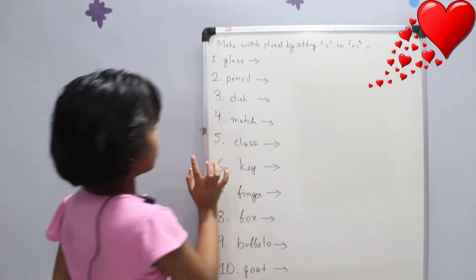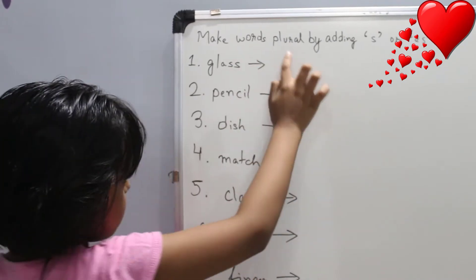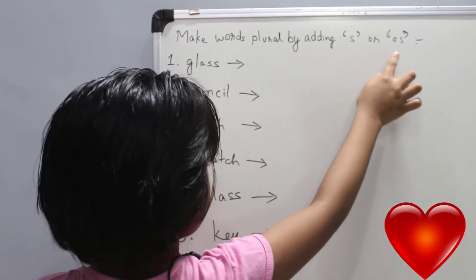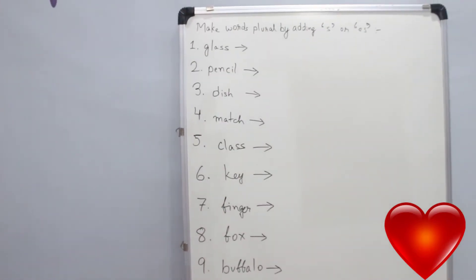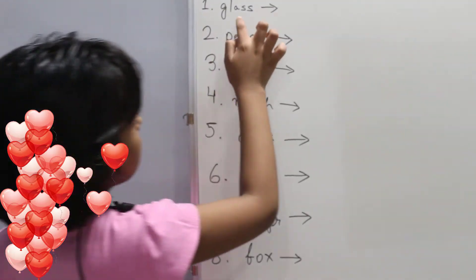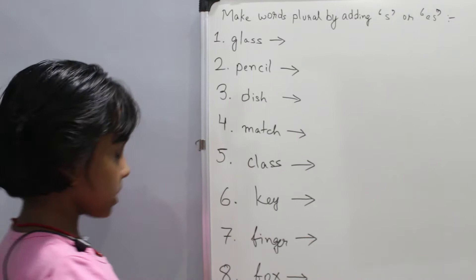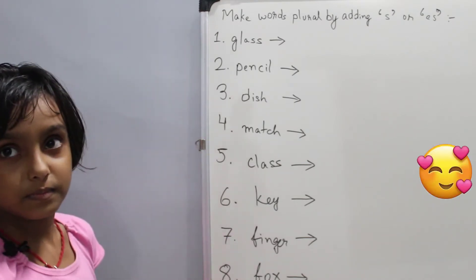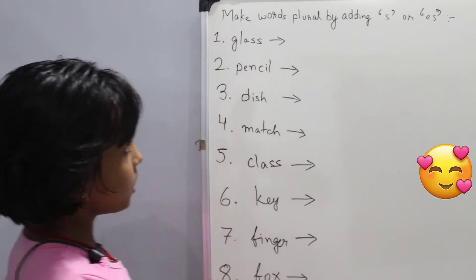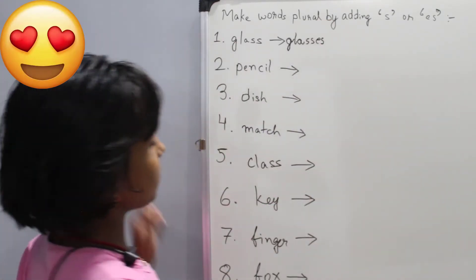So the question is make words plural by adding s and es. So one number question is glass. So which is plural? So it will be plural. So the answer is glasses.